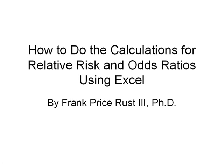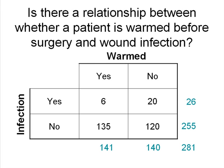In this very short lesson, we'll learn how to do the calculations for both relative risk and odds ratios using an Excel spreadsheet made by your old Uncle Frank. We'll use the data from the last lesson, and we'll look at whether there is a relationship between whether a patient is warmed before surgery and wound infection.